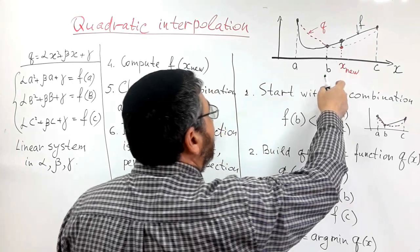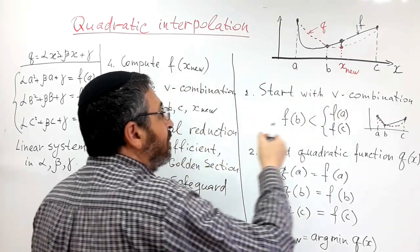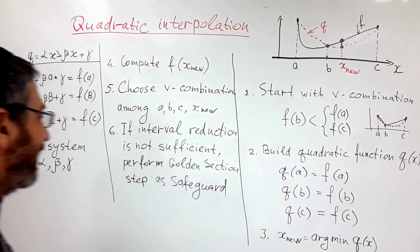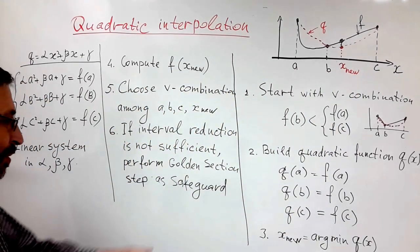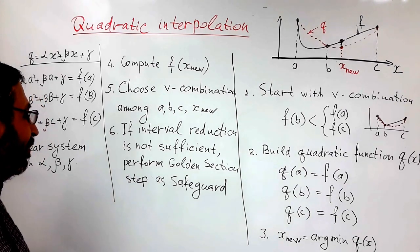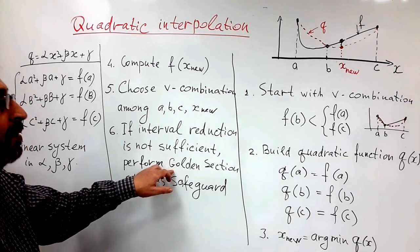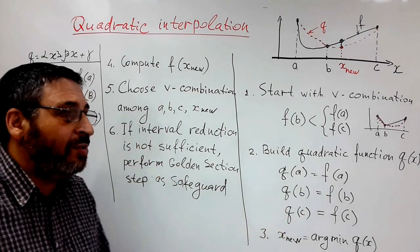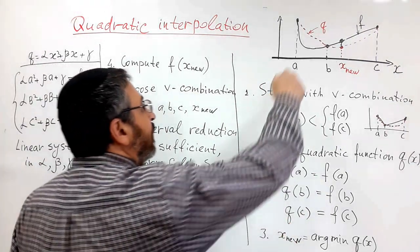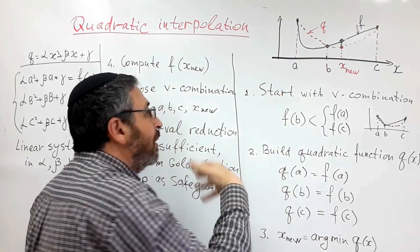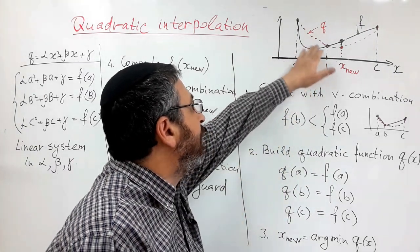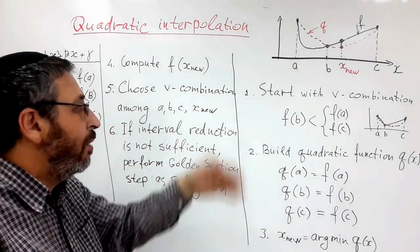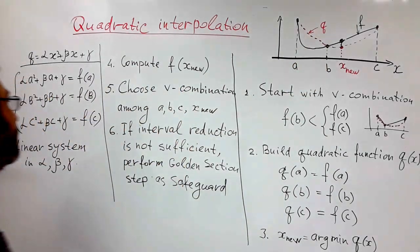Sometimes it may happen that our interpolation is so bad that the new interval is very close to the original interval. In this case we do a so-called safeguard step—we perform one or two steps of golden section which guarantee to shrink the interval. And then when we will be close to solution and our quadratic approximation will be really close to the function itself, our progress will be much more significant.